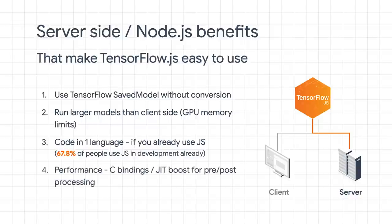Finally, there's performance. Node.js takes the same C bindings just like Python has, so you've got the same code acceleration and AVX support on the GPU and CPU respectively. And due to the just-in-time compiler in JavaScript, you get a boost if you're doing a lot of pre- and post-processing too, which you wouldn't get in the Python world.